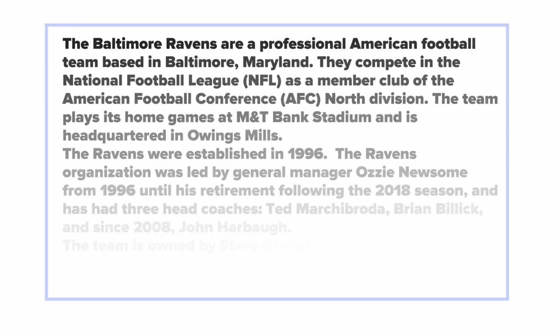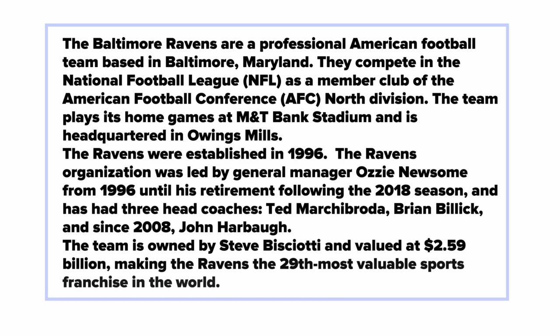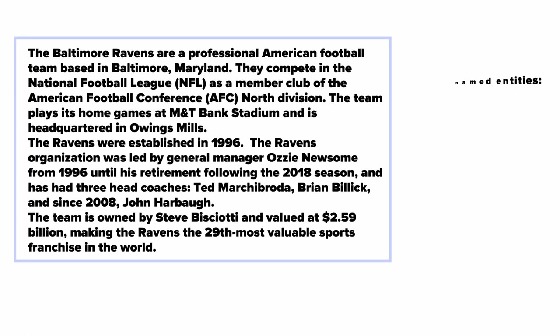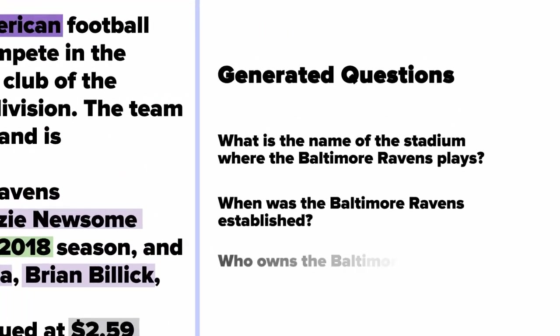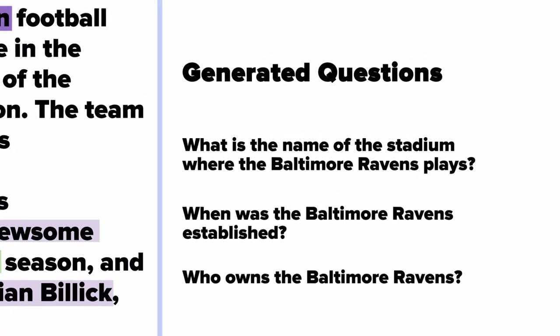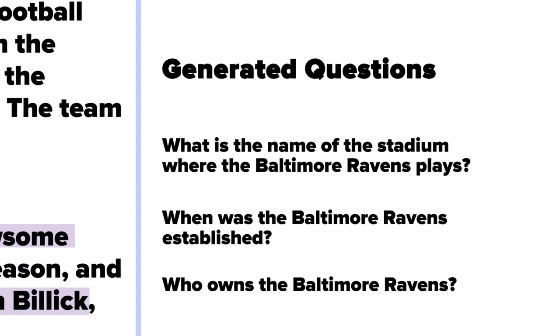How to extract important information? An article is tagged by named entity recognition. By using filters, it's possible to generate types for name entities, like person, nationality, geographic, organization, date, product, etc. After information processing, the system generates questions.